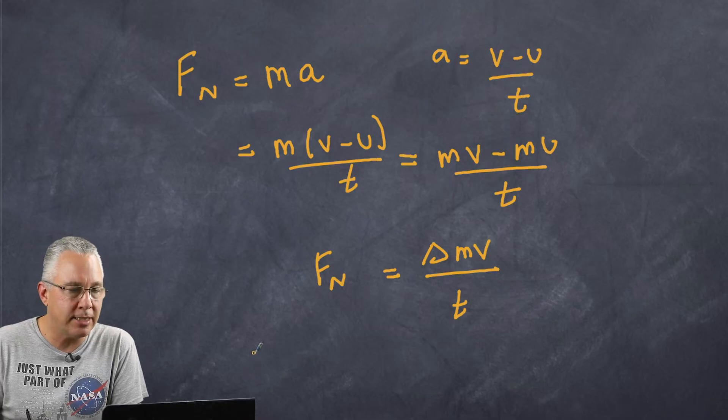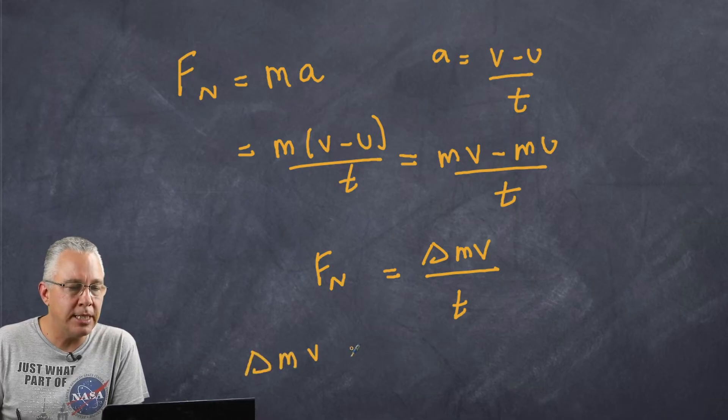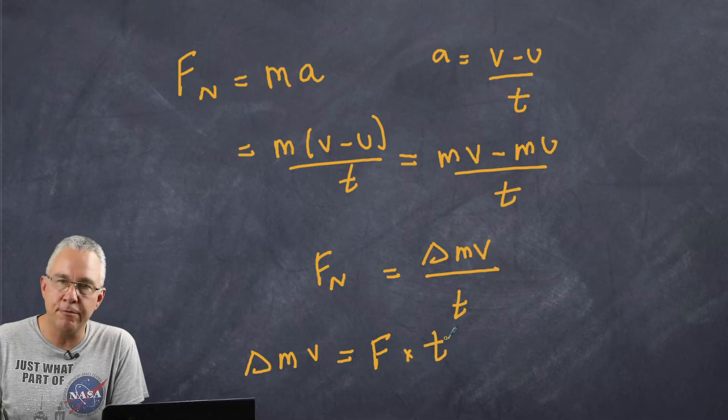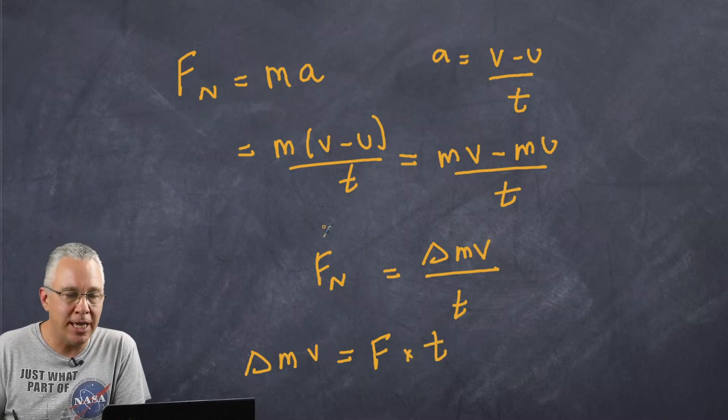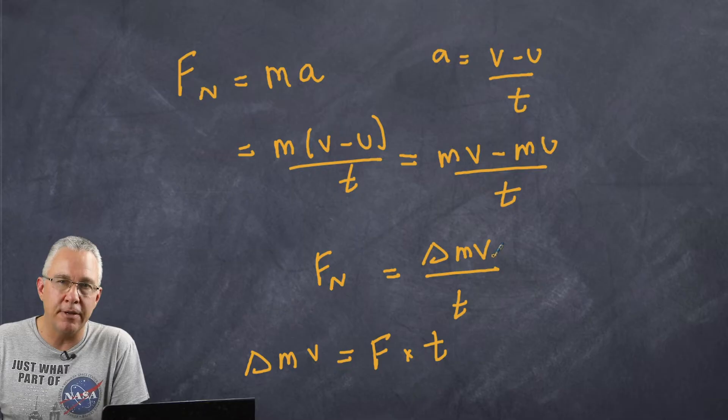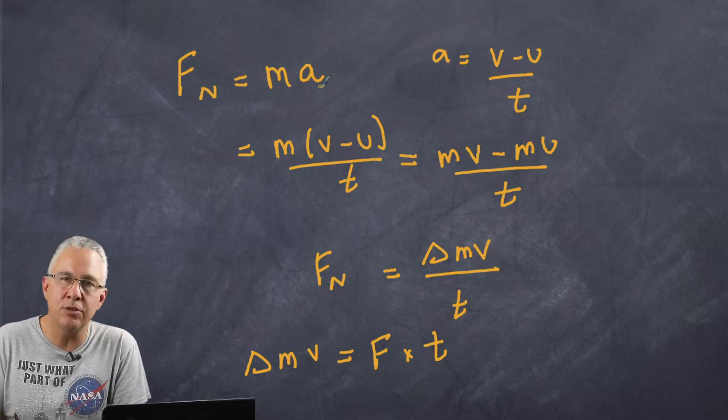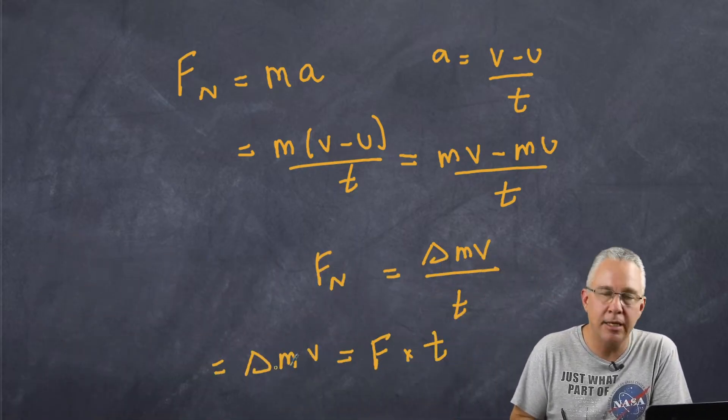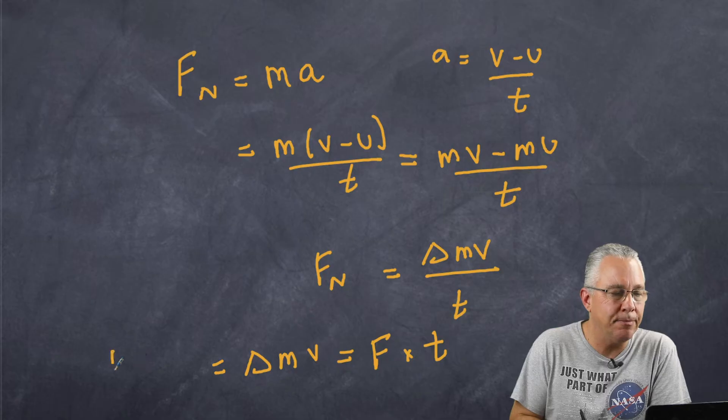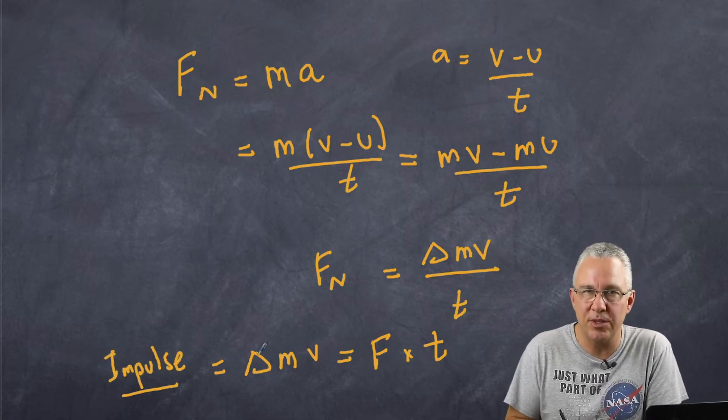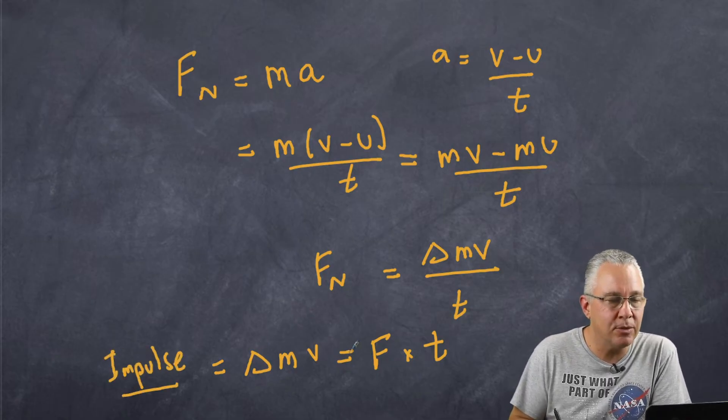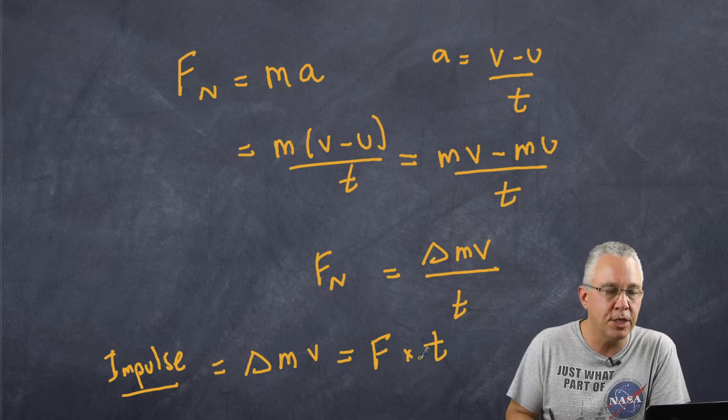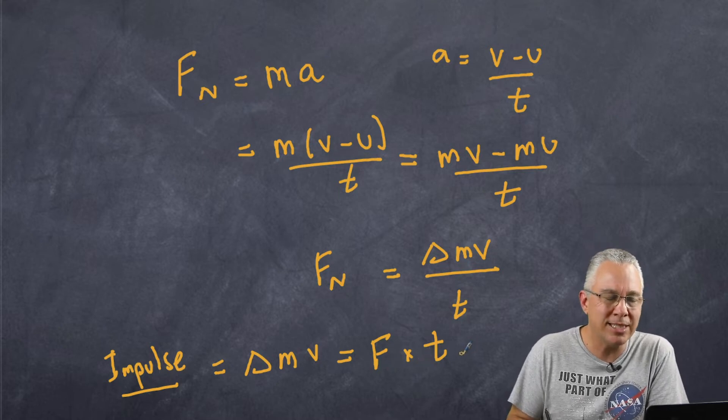Or another way I can write this is that the change of momentum is equal to the force multiplied by the time that that force acts. So there is actually a definition of Newton's second law not in terms of F equals MA but the rate of change of momentum is the net force. Now this thing here of delta MV is called the impulse, or sometimes we write just simply I. And it is equal to the product of the force times the time.